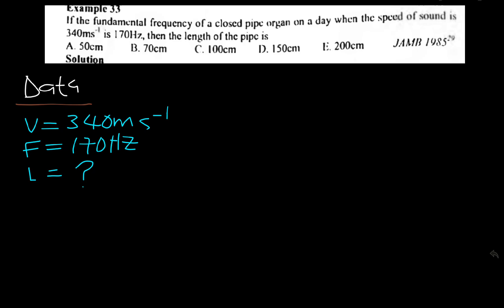You need to know that the relationship between velocity, frequency, and length is: frequency equals velocity over 4L. Since we are talking about a closed pipe here, it's 4L. This is the relationship between frequency, velocity, and length.